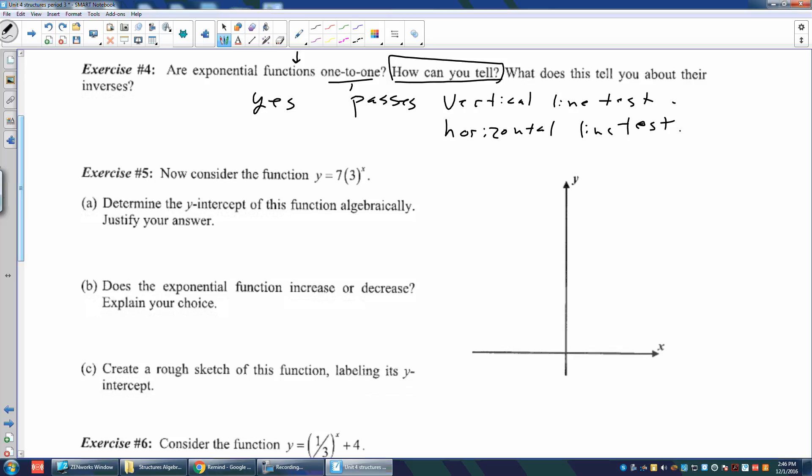Now consider the function y equals seven times three to the x. Wow, that's going to shoot up fast. Determine the y-intercept of this function algebraically. The y-intercept is going to be somewhere here. Let's just say it's right there. Well what do we know about it? We know that x is zero. So all we have to do is plug in a zero for the x. Seven times three to the zero equals seven times one because anything to the zero power is one. So that's seven. So that gives us a situation. Remember when I said pluses? It also gives a situation when we have something in front of the b. This is the b. That's the a number. I wonder what the c number is. Plus c.